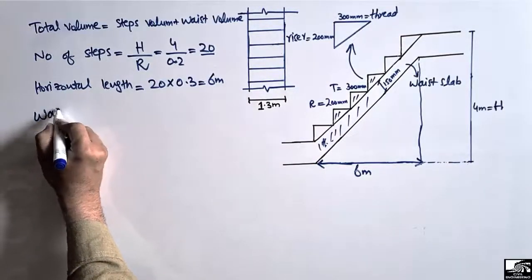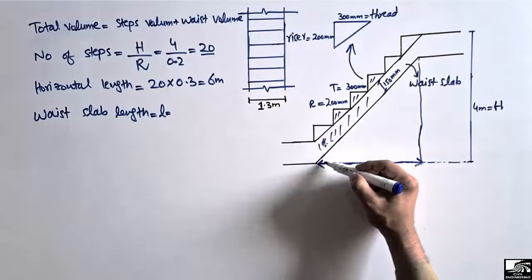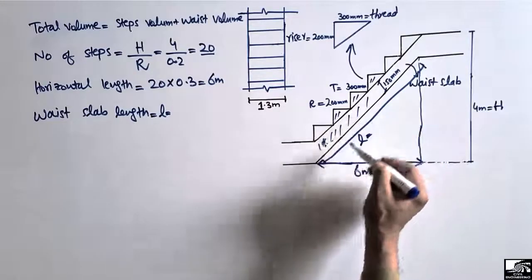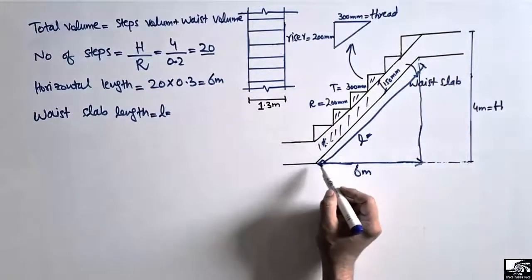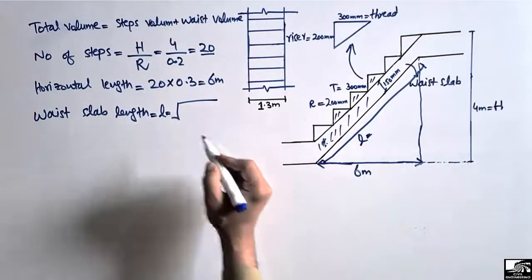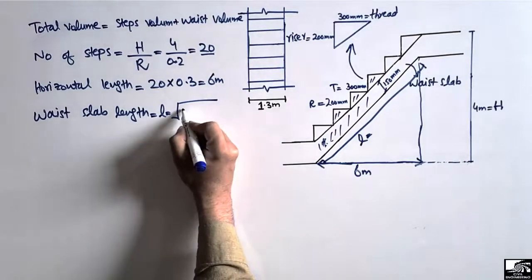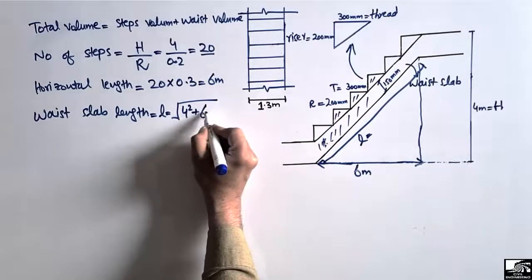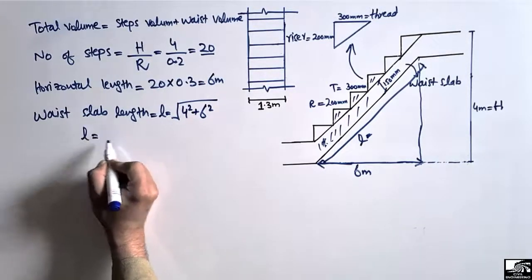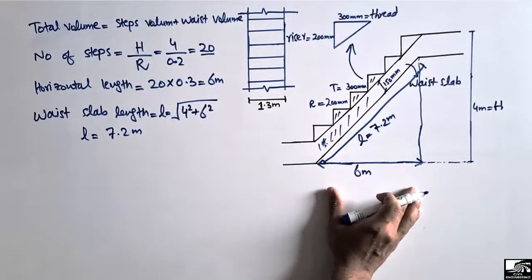Now we find the waist slab length — this is the inclined length from the bottom point to the top point of the slab. Since we know the height is 4 meters and the horizontal length is 6 meters, we can use the Pythagorean theorem: L equals the square root of (4² + 6²). This gives us a waist slab length of 7.2 meters.